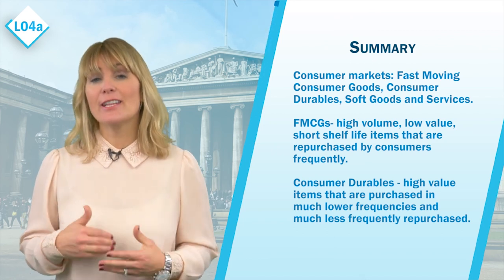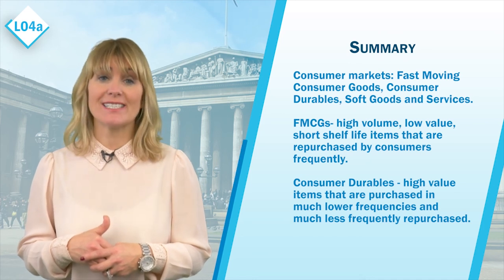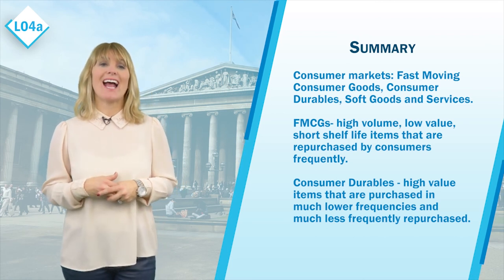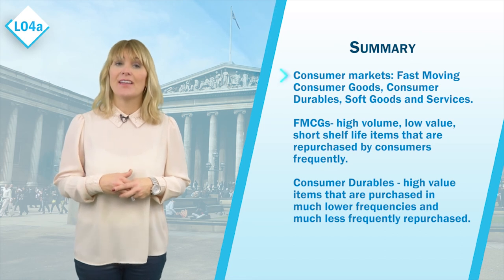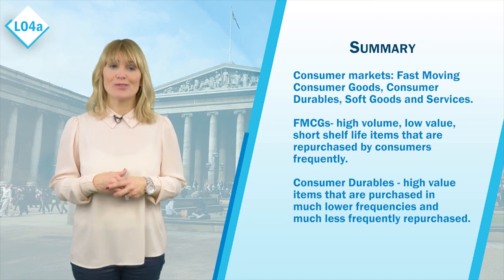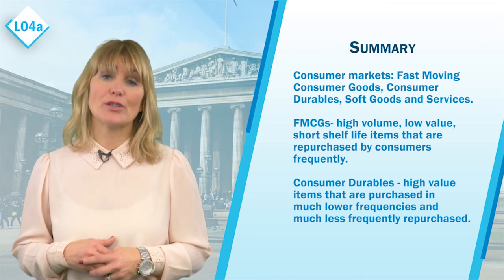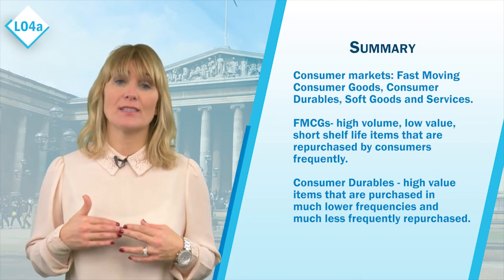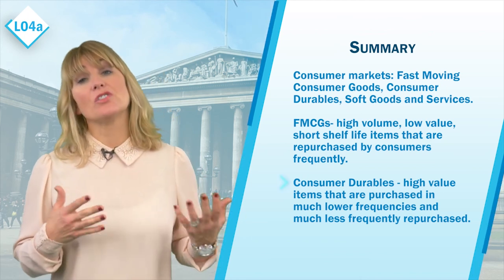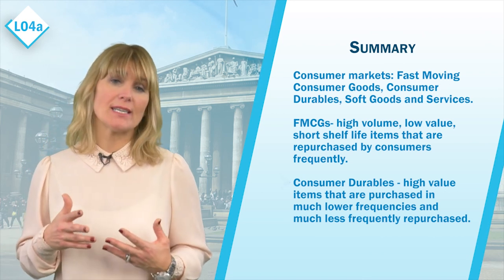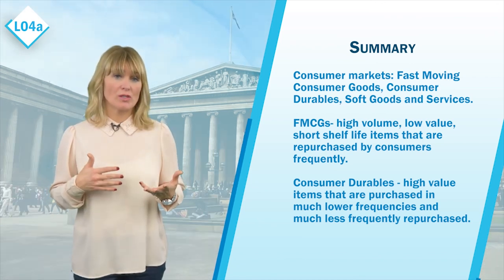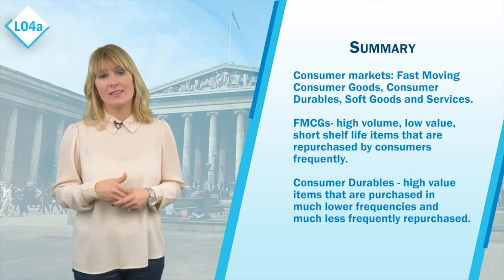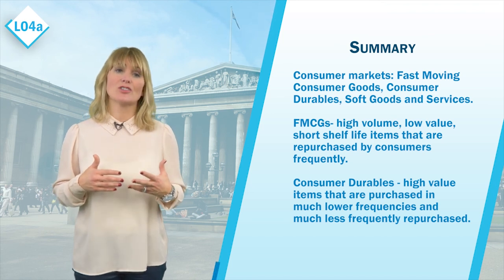We've now finished talking through all the content required for this learning objective, so let's summarize what we've learned. The learning objective was to plan marketing mixes for two different segments of the consumer market. We started by looking at the different types of consumer markets, classifying them as fast-moving consumer goods, consumer durables, soft goods, and services. We focused on the first two segments: FMCGs — high volume, low value, short shelf life items repurchased frequently — and consumer durables — high value items purchased much less frequently. We then looked at how to formulate a marketing mix for each of these two sections, comparing the differences between each of the four P's.